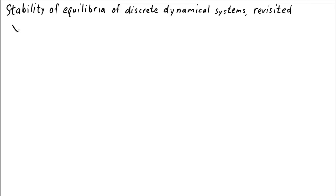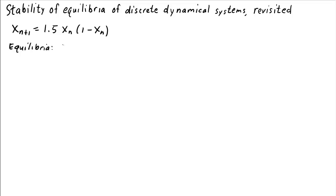Let's say I had the dynamical system xn+1 equals 1.5 xn times (1 minus xn). Let's find the equilibria. We plug in xn+1 and xn equal the same value, let's say e.